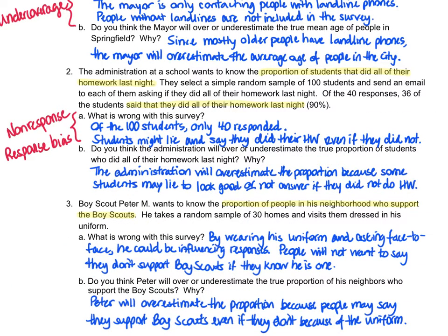In number three, Boy Scout Peter M. wants to know the proportion of people in his neighborhood who support the Boy Scouts. He takes a random sample of 30 homes and visits them dressed in his Boy Scout uniform. What's wrong with this survey? Because Peter is wearing his uniform and asking face-to-face, he's probably influencing their responses — neighbors won't want to say they don't support Boy Scouts knowing he is one. This will likely lead to Peter overestimating the proportion. Again, this is an example of response bias, where Peter created the bias by not being neutral and presenting himself as a Boy Scout.